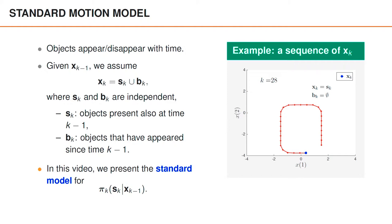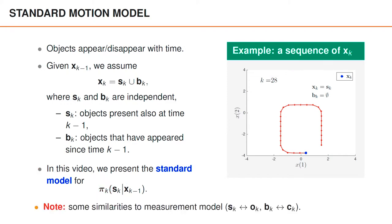In this video, we present the standard model for the distribution of surviving objects, sk, given xk-1. We use boldface pi with subindex k to denote this model. There are striking similarities between the motion model and the measurement model, at least the way we present them here. In some sense, the surviving objects play a similar role in the motion model as the object detections do in the measurement model. There are also similarities between the clutter ck in the measurement model and the appearing objects bk in the motion model, though I'm not saying that appearing objects is like clutter — they simply play similar roles in the different models.